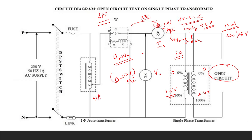By using this autotransformer we are going to set the rated voltage, and the rated voltage will be measured by the corresponding voltmeter V0. After setting the rated voltage, we are going to measure the corresponding core loss as well as the no-load current of the transformer. The fuse rating will be around 120 percent of the rated current — 5 amps is enough for open circuit.